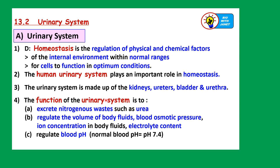The function of the urinary system is to excrete the nitrogenous wastes such as urea. It is a system involved in excretion. It helps to regulate the volume of body fluids — for example, the volume of water in the blood and other body fluids. It also helps to regulate the blood osmotic pressure, which depends on the concentration of salt and water in the blood. This will be discussed more in the second video. It also regulates ion concentration in body fluids — the electrolyte content. By controlling the concentration of hydrogen ions, it can help to regulate the blood pH. Normal blood pH is 7.4.